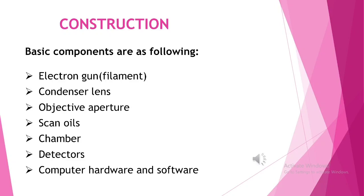Next, we are going to look at the construction of a scanning electron microscope. The basic components of a scanning electron microscope are an electron gun (that is, a filament), condenser lens, objective aperture, scan coils, chamber, detectors, and computer hardware and software.